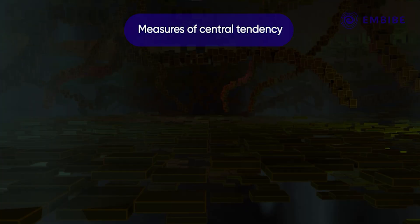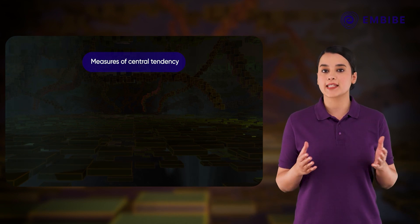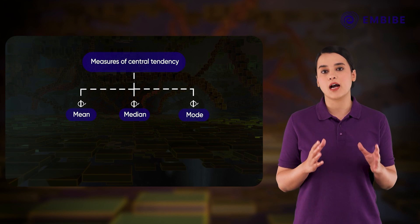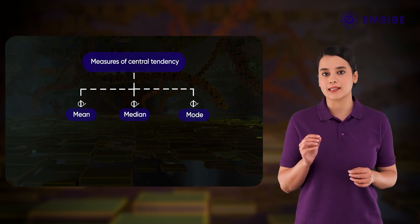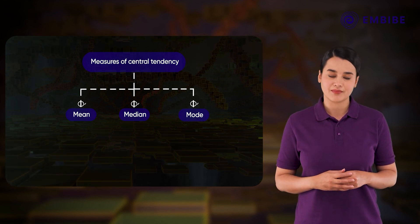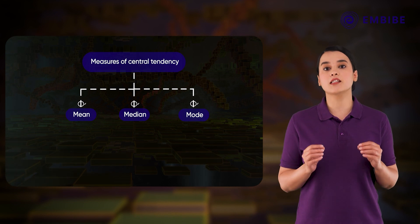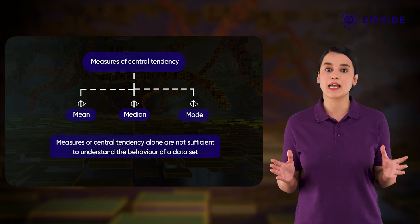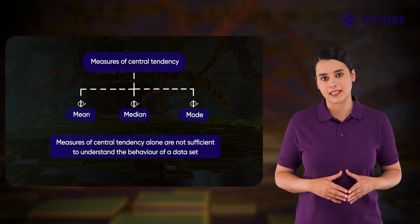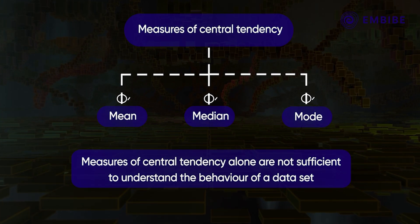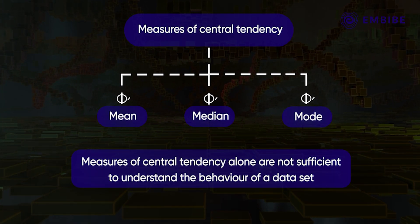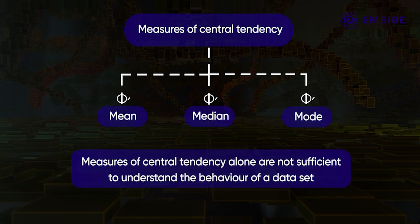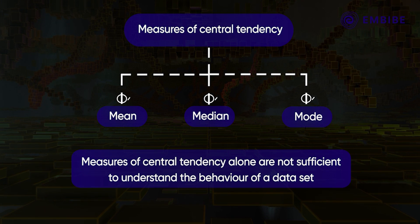The three measures of central tendency — mean, median, and mode — give a rough idea of where the data points are centered in a data set. However, sometimes that alone is not sufficient to understand the behavior of the data set. The characteristics of the data change if the data points are scattered or dispersed. How would you measure the scattering?